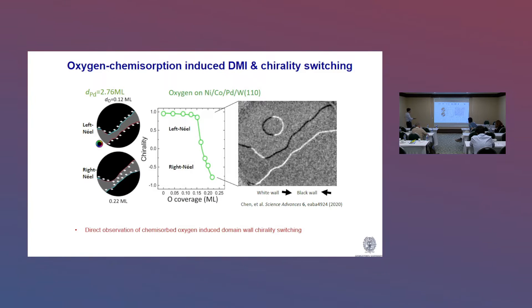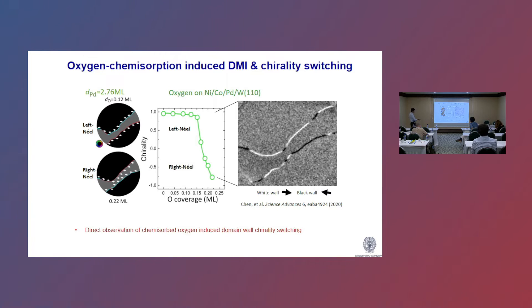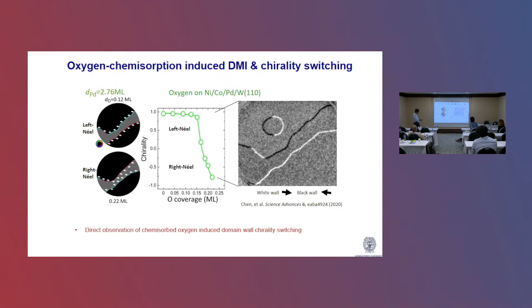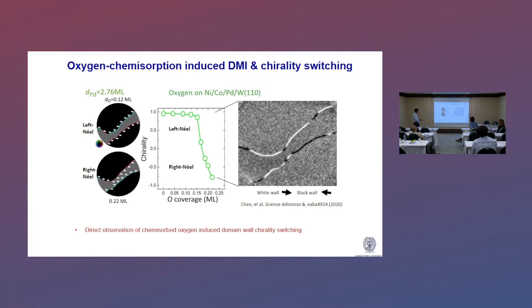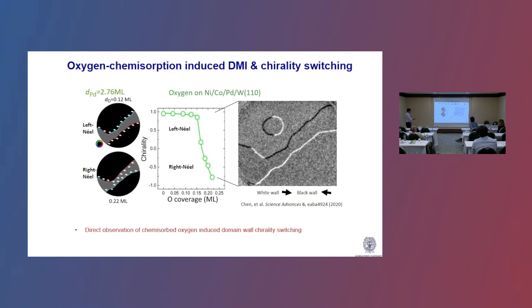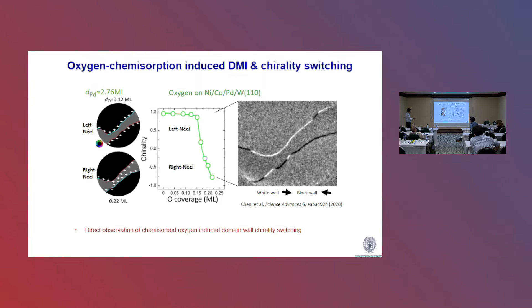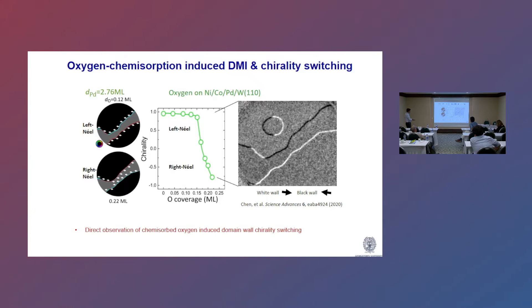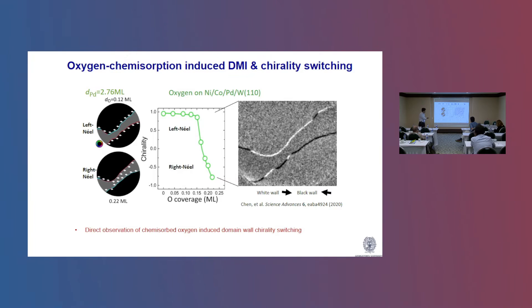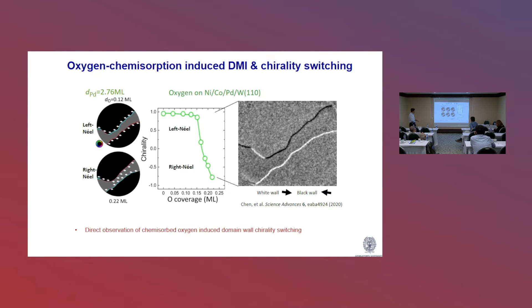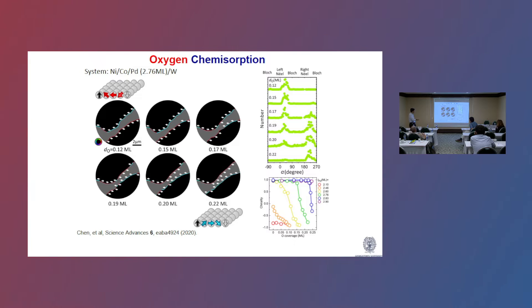And so at 2.76 monolayer, we see initially the contrast. This is a SPLEEM video. As we introduce oxygen, this is less than one monolayer of oxygen. We see the contrast going to change. Initially, it was white here, black on top. As we introduce oxygen, the contrast switches. And this is more clearly shown here. Initially, we have left-handed Néel. The arrows are pointing from gray to black. And then after we introduce less than quarter monolayer of oxygen, we see this exactly switches. So the domain wall has switched from left-handed Néel to right-handed Néel. And this is a frame-by-frame breakdown. As we increase the oxygen coverage, we see this transition. We can also quantify this transition by monitoring this angle, which is the angle magnetization makes with respect to domain wall normal. So at low oxygen coverage, we see a single peak indicating left-handed Néel. And eventually, as we increase the oxygen coverage, we see a right-handed Néel. And in between, there's the zero DMI point.